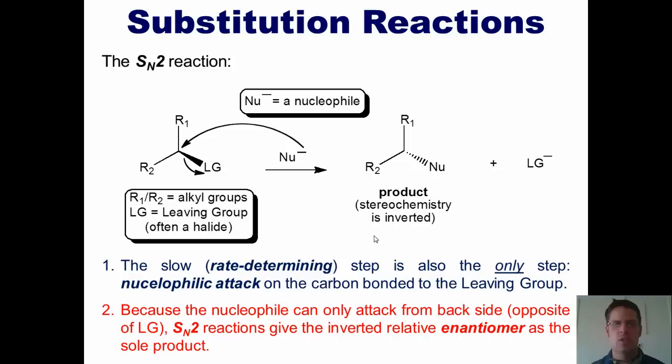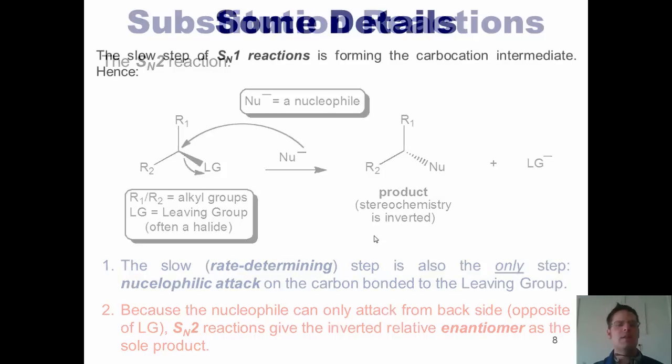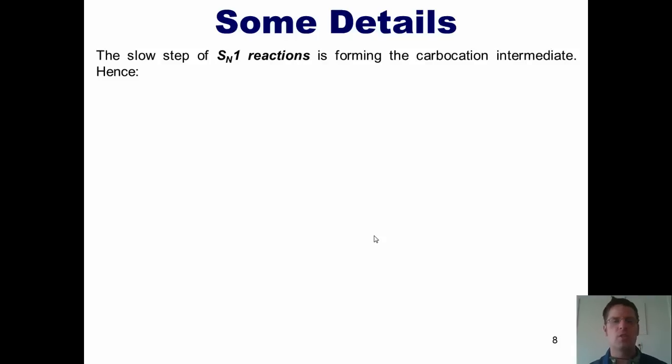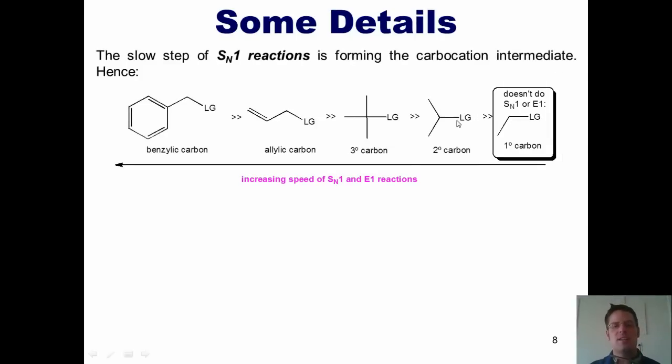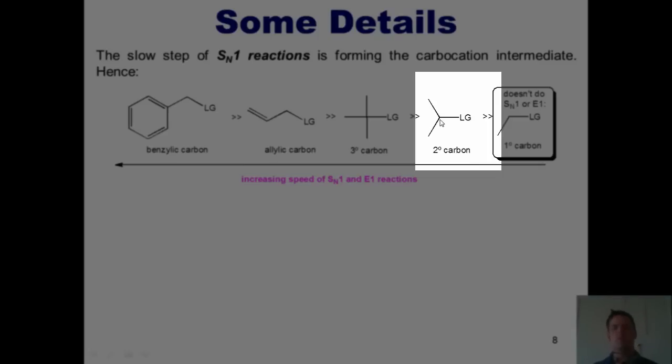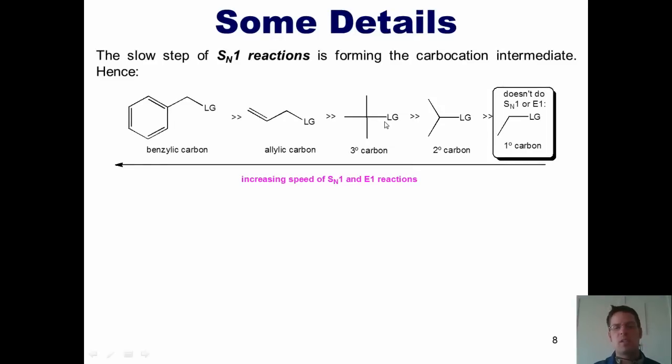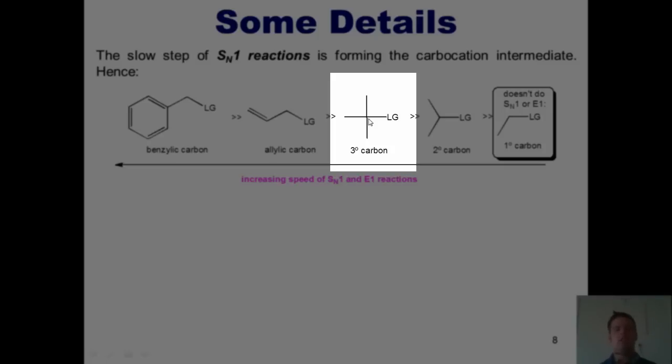A couple things we need to note are, first, the slow or rate determining step also happens to be the only step. There's only one step in an SN2 reaction. Two, because the nucleophile can only attack from the back side, that is, the side opposite the leaving group, we end up getting a product whose stereochemistry is inverted relative to the three-dimensional stereochemistry or configuration of the starting material. That is the difference between SN1 and SN2. Now, as I mentioned earlier, the slow step of an SN1 reaction is forming the carbocation intermediate. Hence, if I have a leaving group stuck to a primary carbon, it cannot do an SN1 reaction. The reason is because, if I were undergoing an SN1 mechanism, the leaving group would have to leave and give me a primary carbocation, which is so unstable that it practically doesn't exist. In contrast, an SN1 mechanism can proceed through a molecule in which the leaving group is stuck to a secondary carbon because when the leaving group takes off, it will give me a secondary carbocation, which is stable enough to exist.